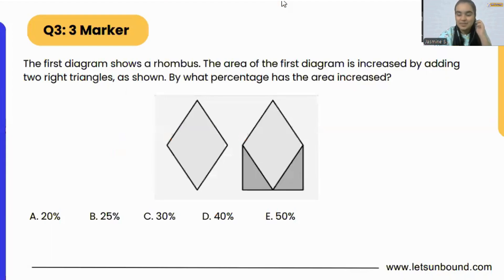Here is the question: The first diagram shows a rhombus. The area of the first diagram is increased by adding two right triangles as shown in the given figure. By what percentage has the area increased? Now this question is pretty easy.